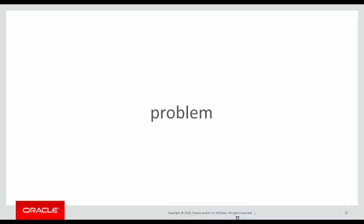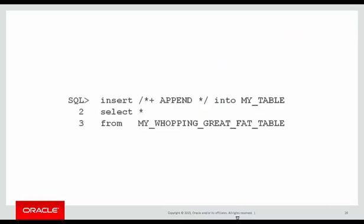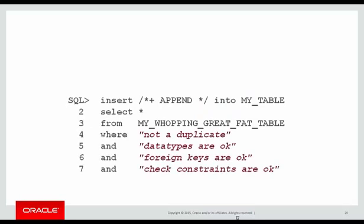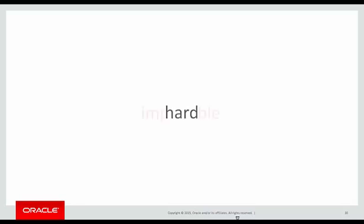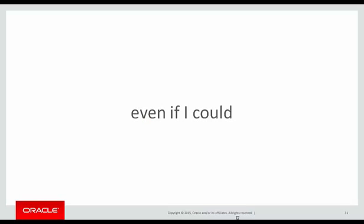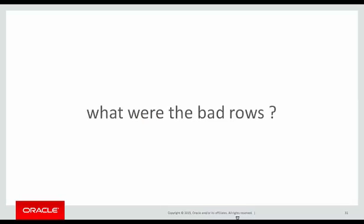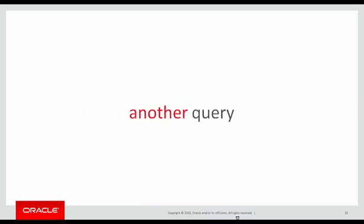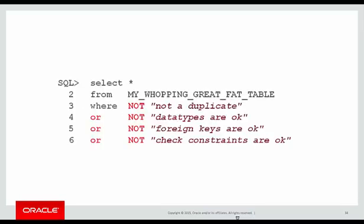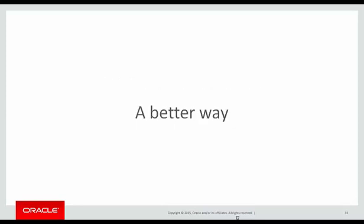But there's a problem. How do you know what rows will successfully load? When I'm doing my insert command, how can I possibly know all the checks I would need to do to make sure my statement won't fail? That's hard. And even if somehow I could know all the rules in advance, when the load is done I still don't know which rows were not loaded. So now I have to write another query with the logical opposite of my load statement to try to find and fix all those bad rows. There is a better way — and that way is DML error logging.